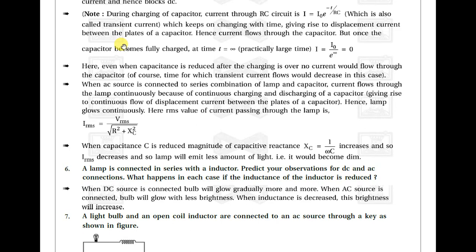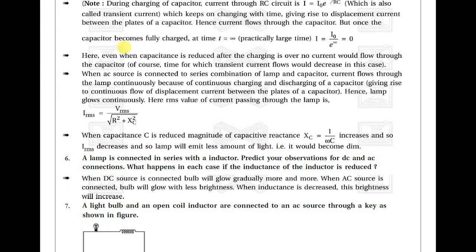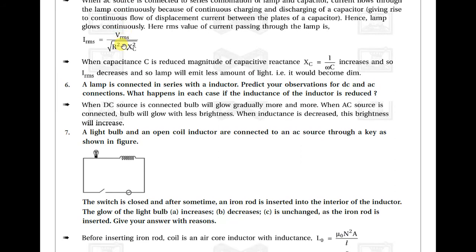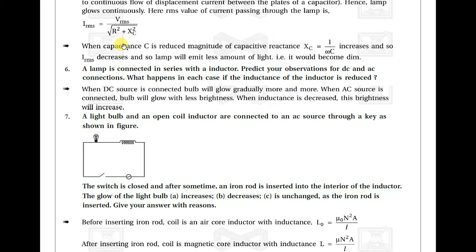When an AC source is connected to the lamp and capacitor in series, current flows continuously due to continuous charging and discharging of the capacitor, giving rise to continuous displacement current. The lamp glows continuously. Irms = Vrms / √(R² + Xc²). If capacitance is reduced, Xc increases, Irms decreases, and the lamp dims.